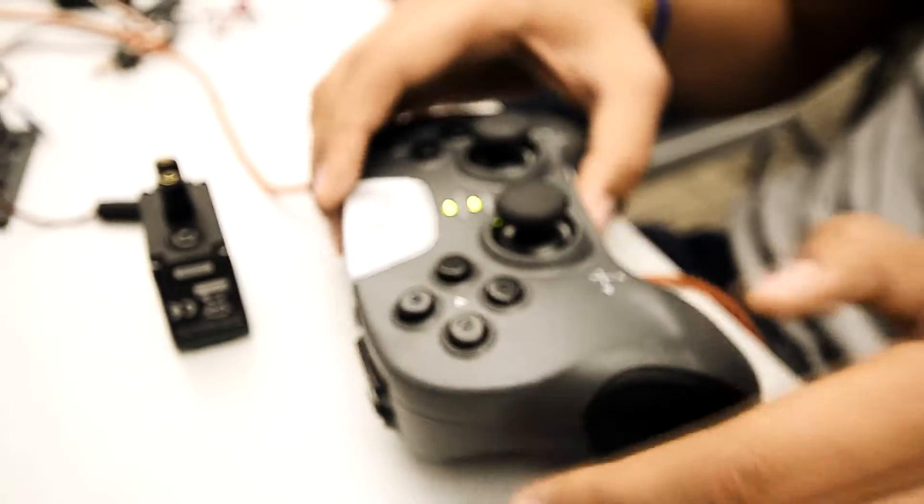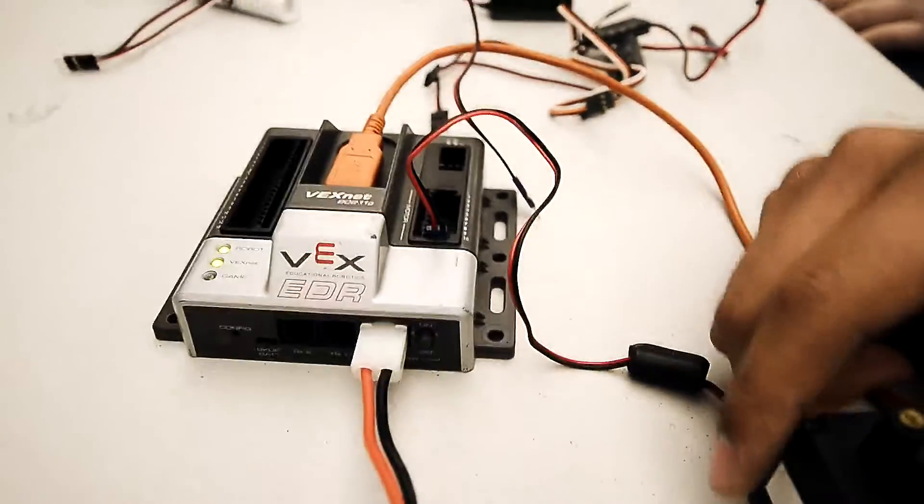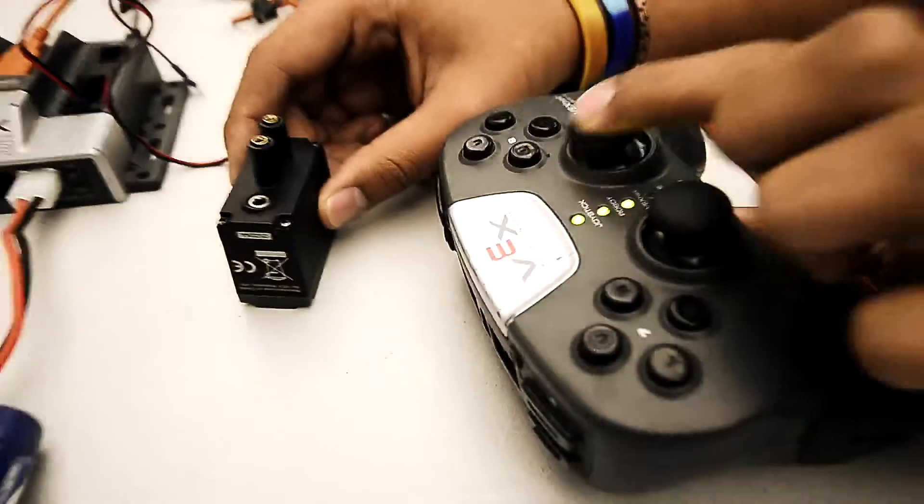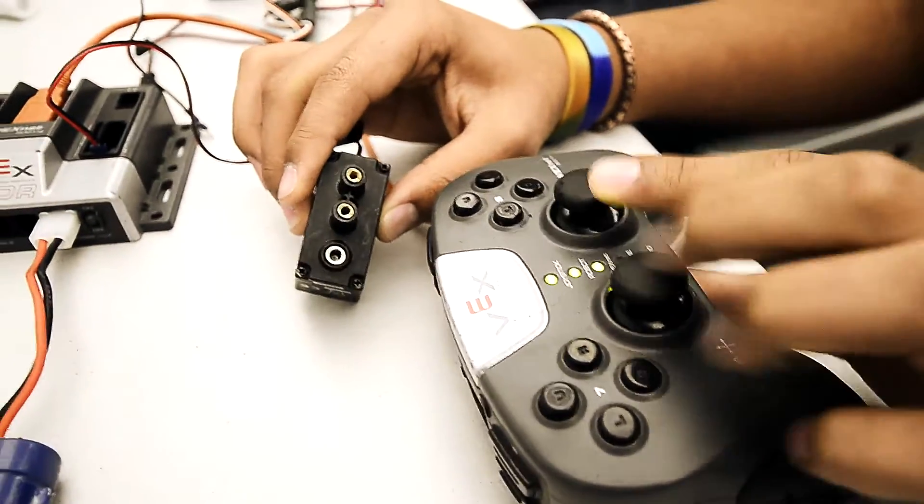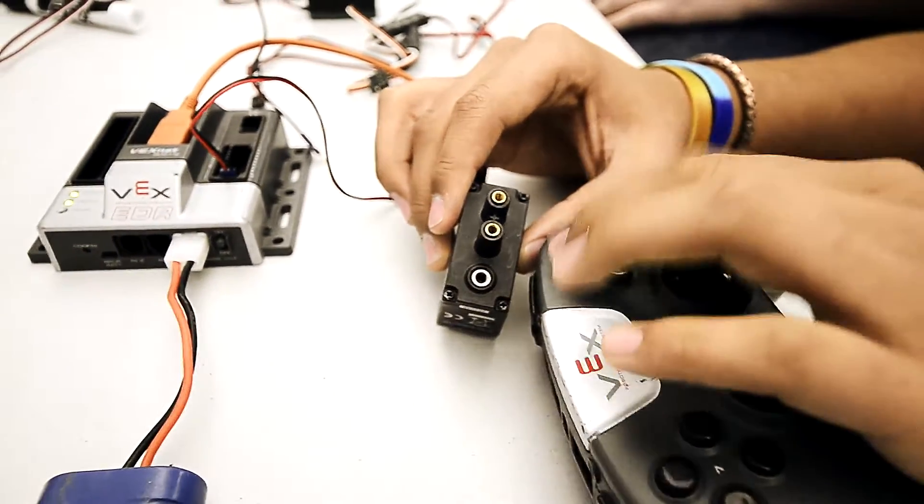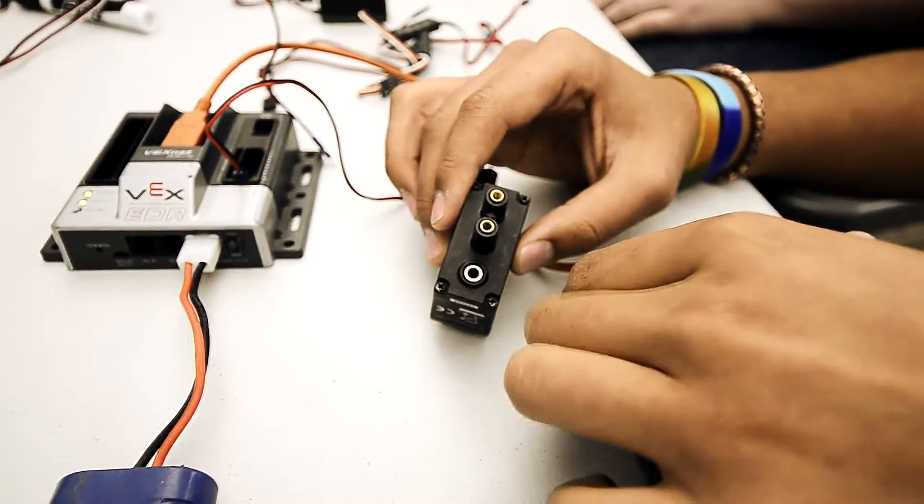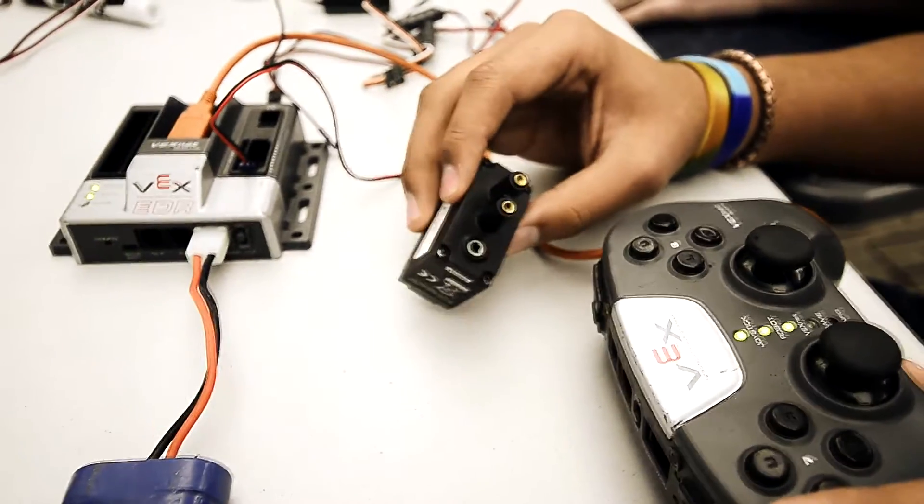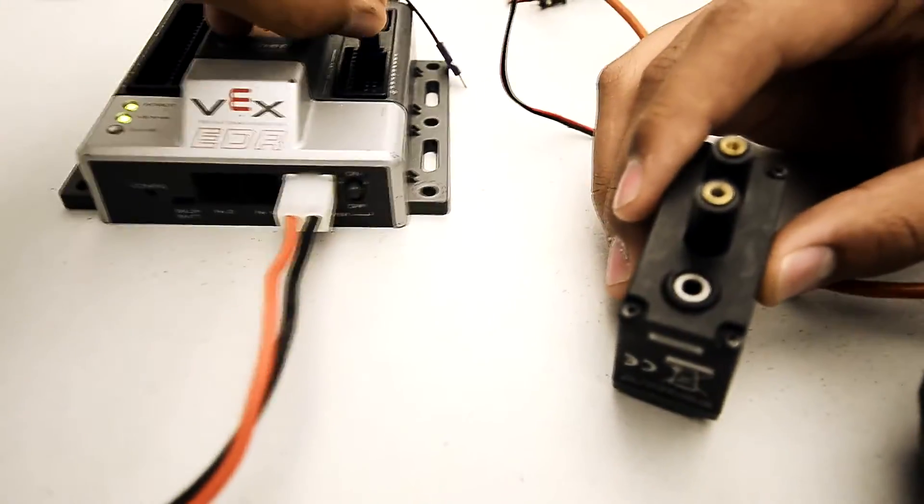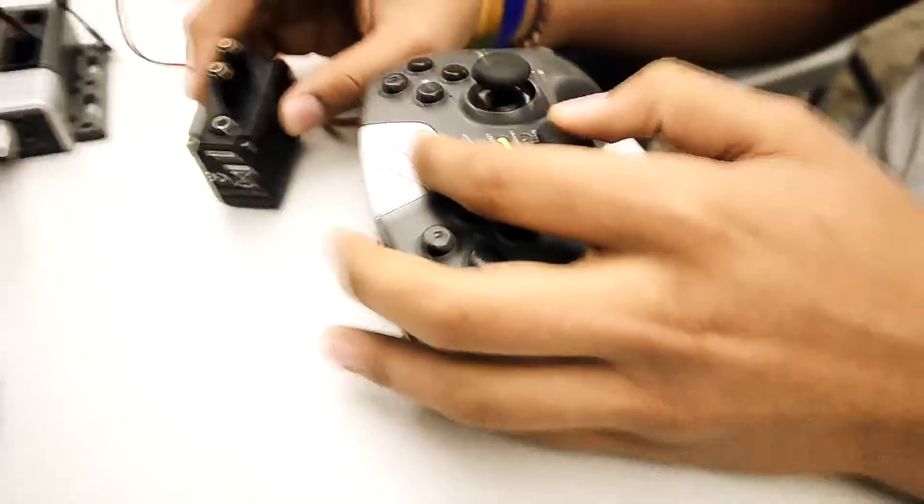It's basically tethered straight to a Vex controller and then through here we obviously connect the battery just to see if it works. So here we go. Right now he's moving it, it's connected to the analog sections of the joystick and it's not working at all. We're pressing all the buttons and nothing is happening.